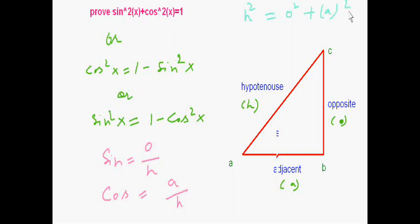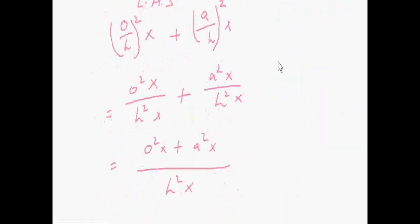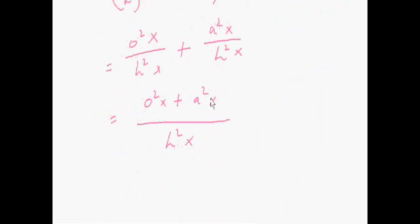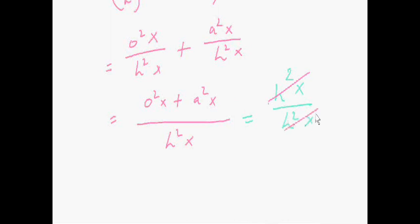This is a basic formula. Now hypotenuse² divided by hypotenuse² cancels to 1, which is the right hand side. Thank you very much.